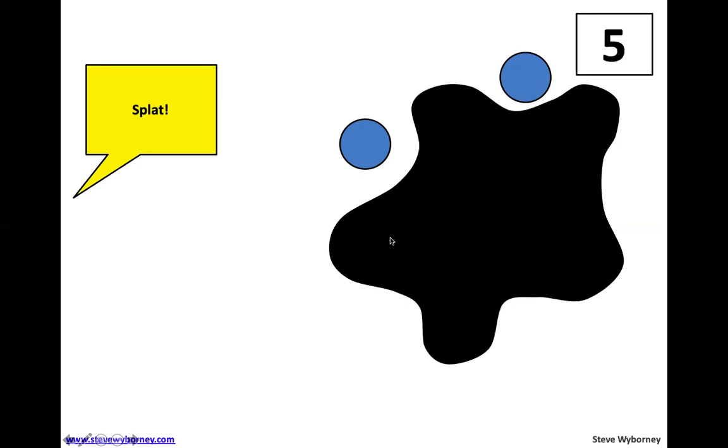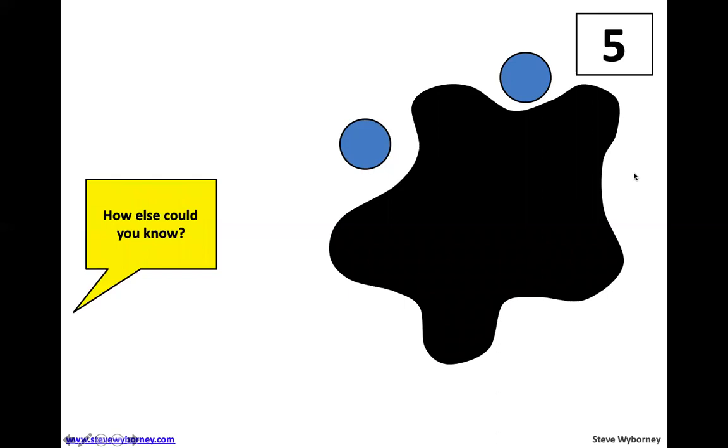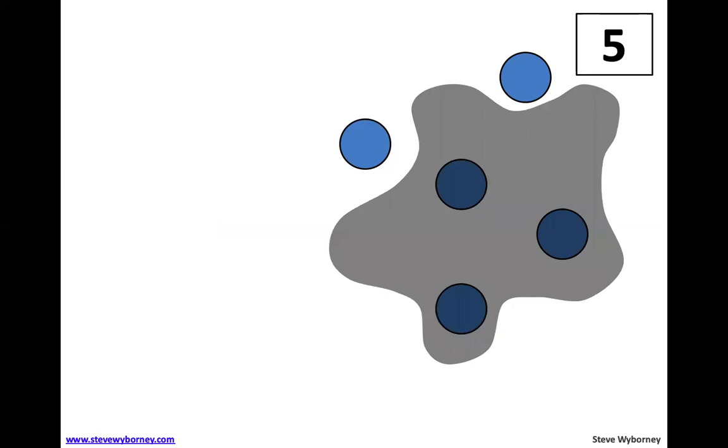Splat! So when that splat happens, there's still five dots, but some of them got covered up by this ink splat. How many shapes are underneath this splat? And how do you know? So I want you to take a minute, think about it. How many dots are out? We know there's five. How many are under this splat? Go ahead and tell somebody in your room how you know. Is there another way you could know? So what did you guys end up guessing? Did you guess three? That's right.